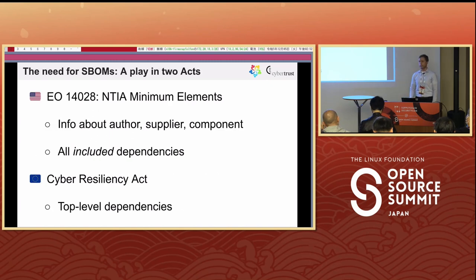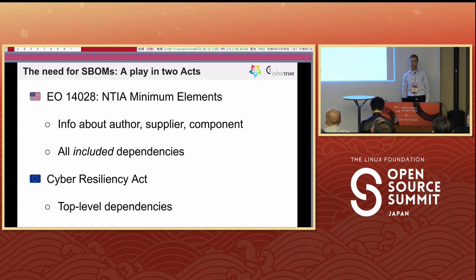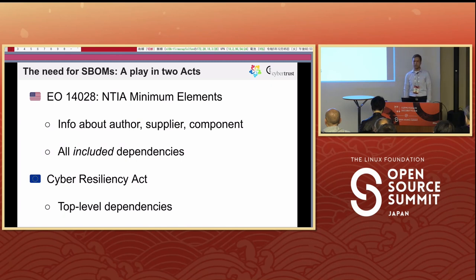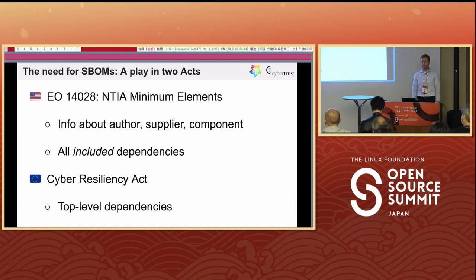First, the why. In the United States in 2021, the president signed Executive Order 14028, which says that if you deal with a federal agency, you need to provide SBOMs to your customer. The requirements are defined in the NTIA minimum elements, which state the SBOM must include who and when created it, who created the software component, the component's name and version, and the dependencies that the component includes.